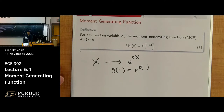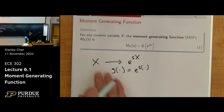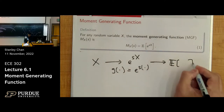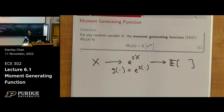Why in this earth do I want to take the random variable, take e to the power S times X? Why not cosine of X, sine of X, or log of X? Why choose exponential of S times X? And then afterwards, why take the expected value of this ugly transformed variable? What does it buy us? Before I answer, let me test whether you really understand chapters 3 and 4.